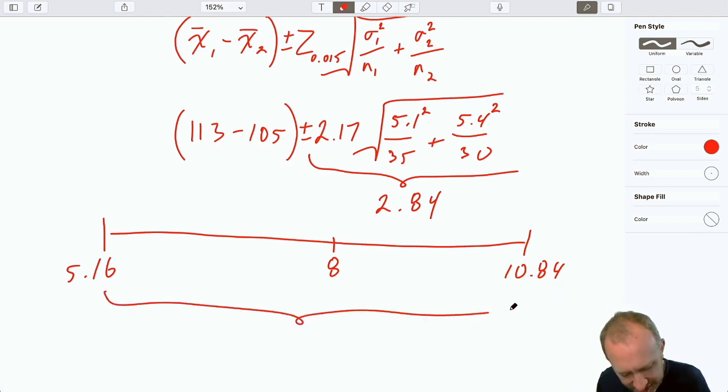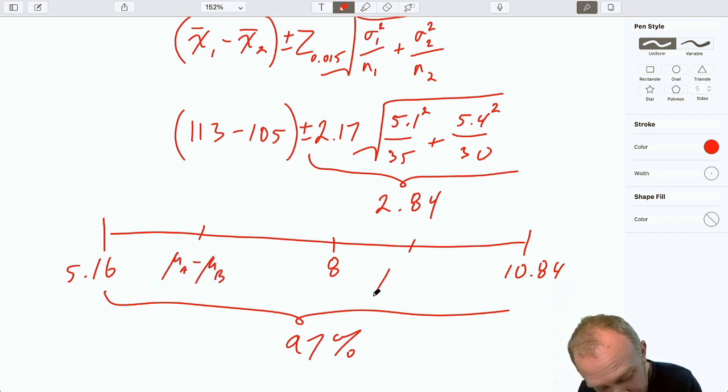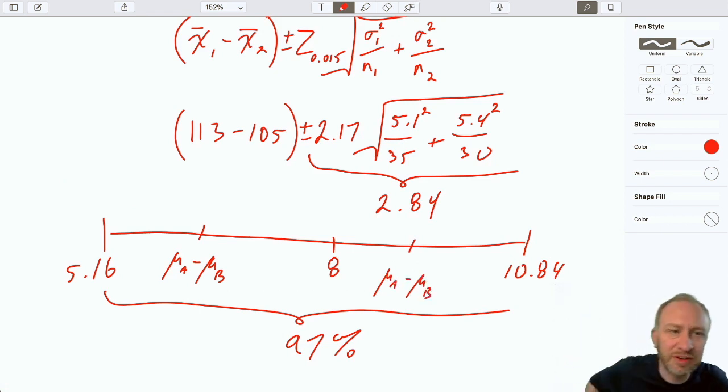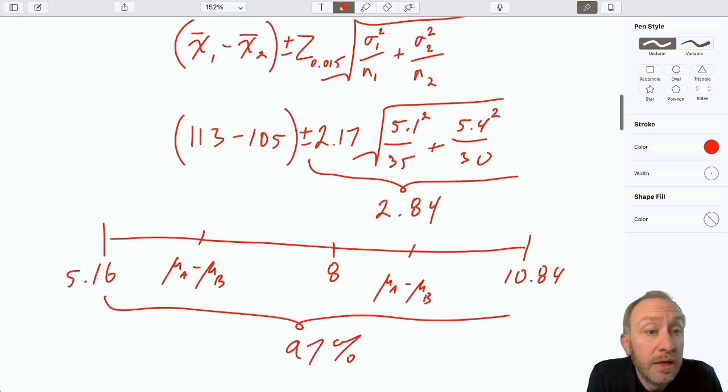So, I have 97% confidence that the true difference in the population means is between 5.16 and 10.84. So, this is that hypothesized difference between mu A and mu B. And again, did I say hypothesized difference? This is our confidence interval estimate for the true population difference between mu A and mu B.